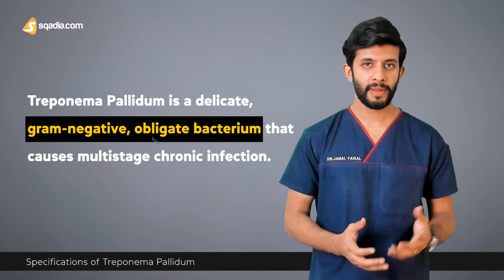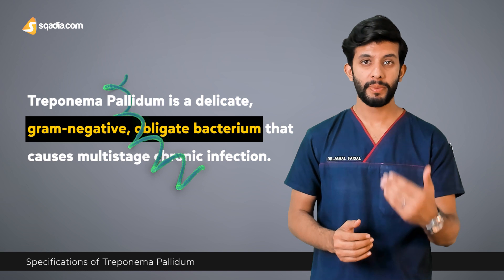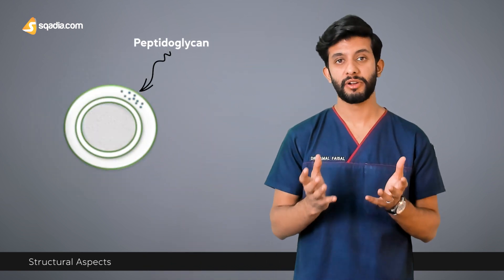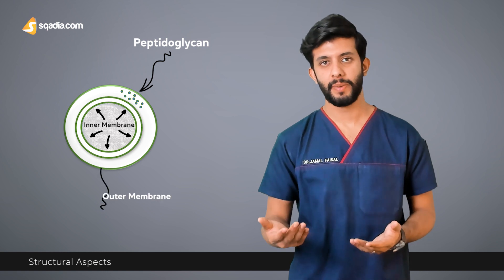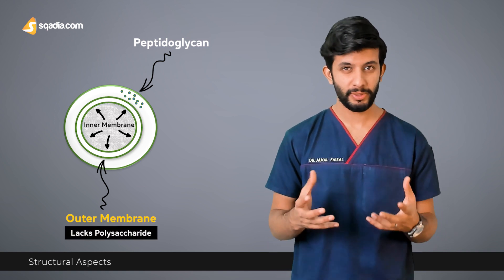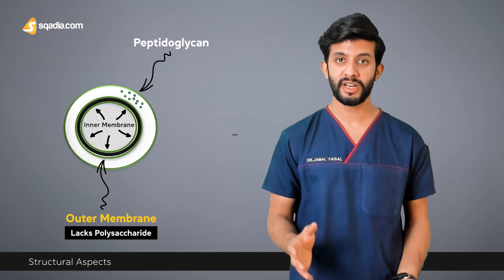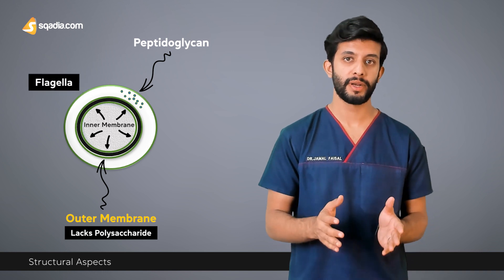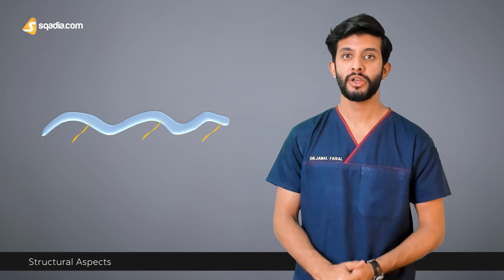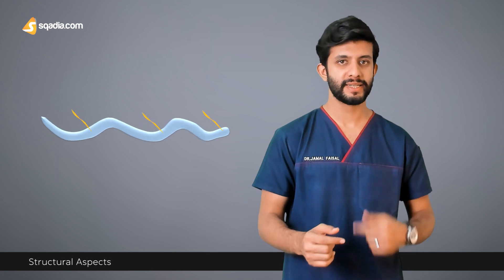Treponema pallidum is a delicate gram-negative obligate bacterium that causes multi-stage chronic infection. Like every other gram-negative bacterium, it consists of a cell wall made of peptidoglycan, an inner membrane, and an outer membrane. The outer membrane of Treponema pallidum lacks the polysaccharide, making it more vulnerable to damage. It also has flagella present between the inner and outer membrane, and the rotational movement of the flagella along its longitudinal axis is responsible for the mobility of this bacterium, allowing it to penetrate and disseminate into the skin.